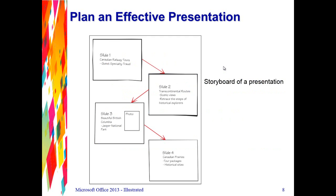This slide shows a little about storyboarding a presentation. Instead of putting text on a slide right away, you can plan out your story first. In this example, we're using the information from the walkthrough — on slide 1 we include this information, on slide 2 this information, on slide 3 this information with the photograph, and on slide 4 this information. It's good to have that outline in place so you know what you want on each slide.